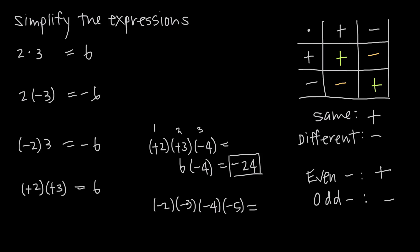With negative 2 times negative 3 times negative 4 times negative 5, we have an even number of negative signs: 4 total. So we expect a positive result. We cancel every two negative signs: the first pair becomes positive, and the second pair becomes positive. Now we have all positive numbers: 2 times 3 is 6, 4 times 5 is 20, and 6 times 20 is 120 — positive 120. The result is positive because we had an even number of negative signs.